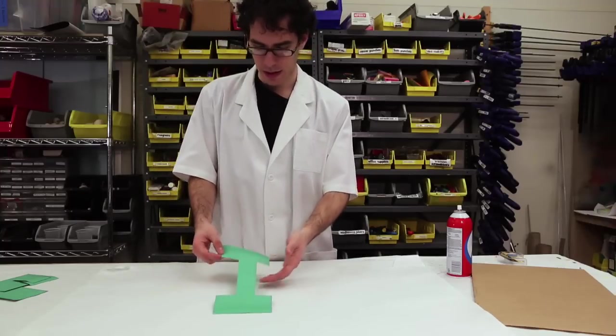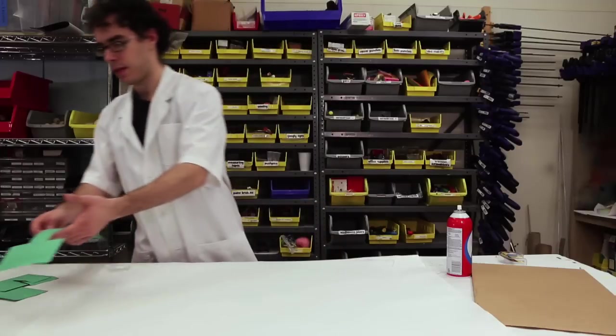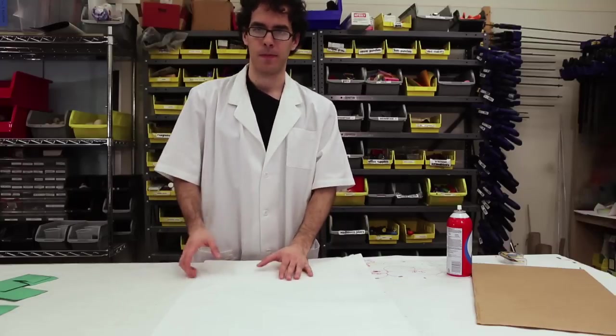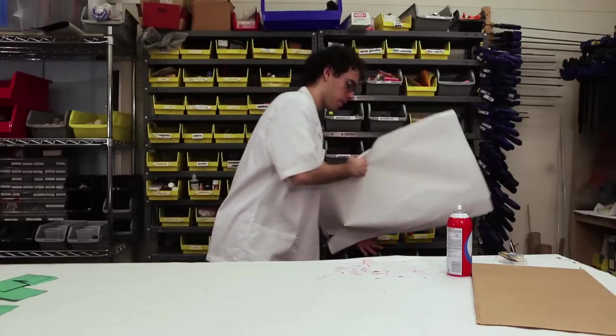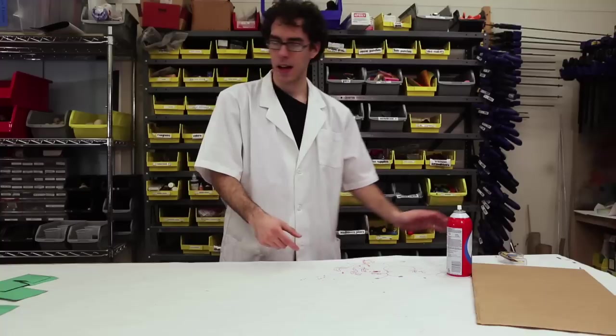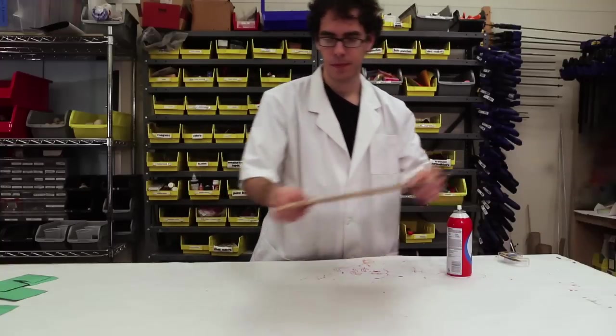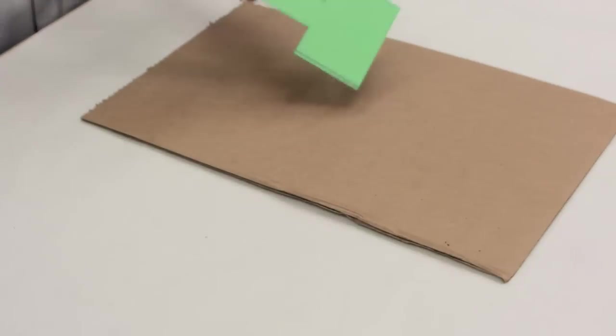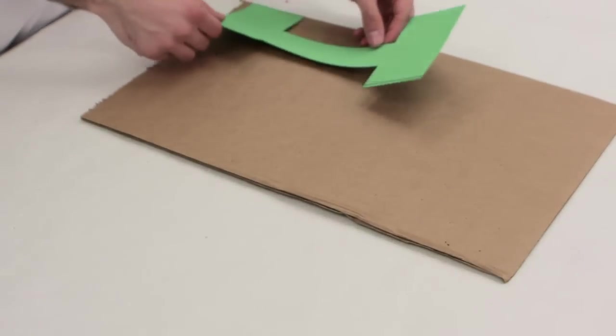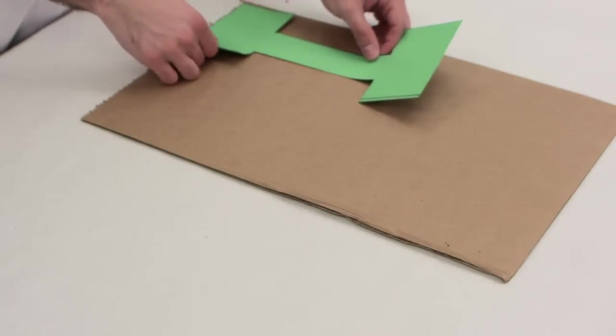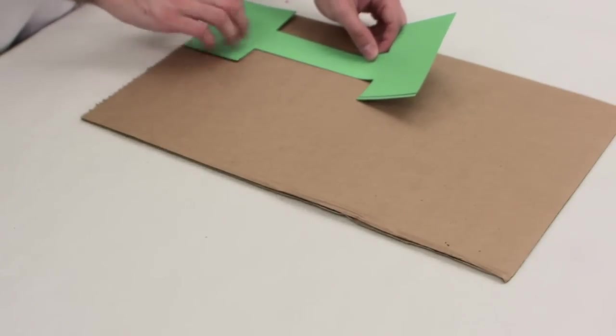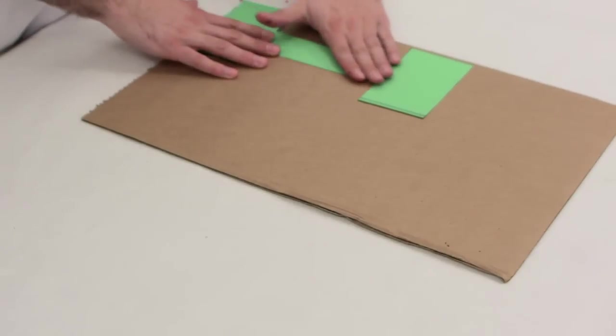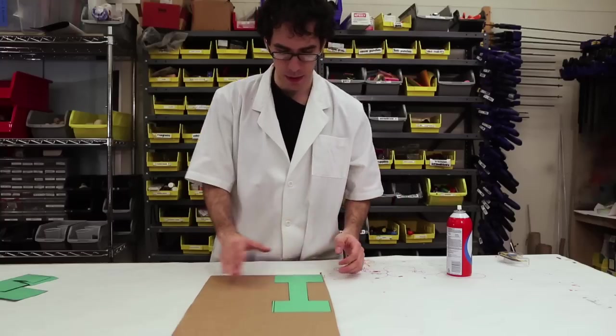So now that we're sure we have a nice even coat of glue on here, I'm going to move it over. Get the scrap paper out of the way. And then the last thing to do is go ahead and stick it on your cardboard. Go ahead and line it up. And then it's a good idea to press from the inside out so you don't get any bubbles.